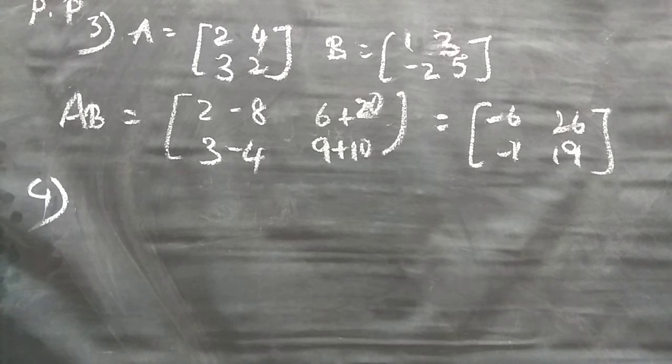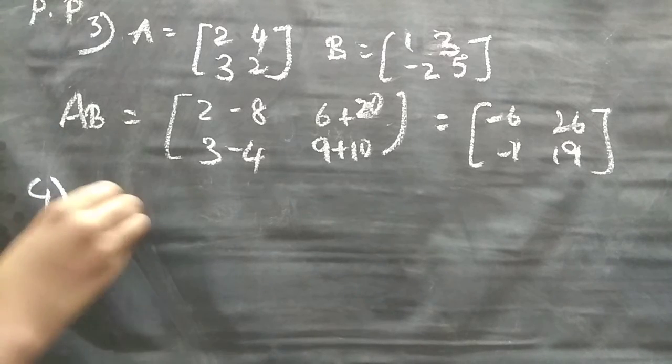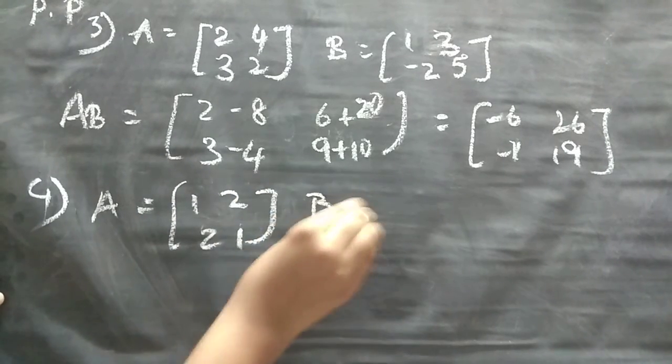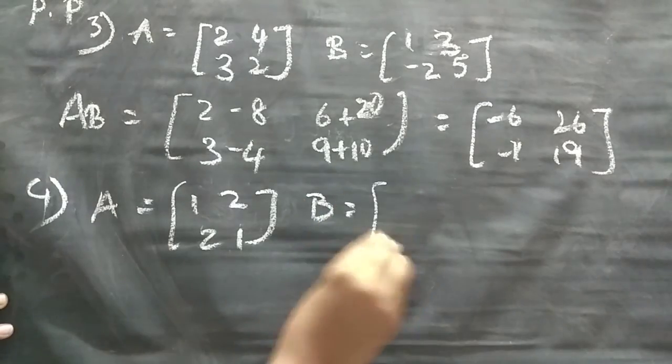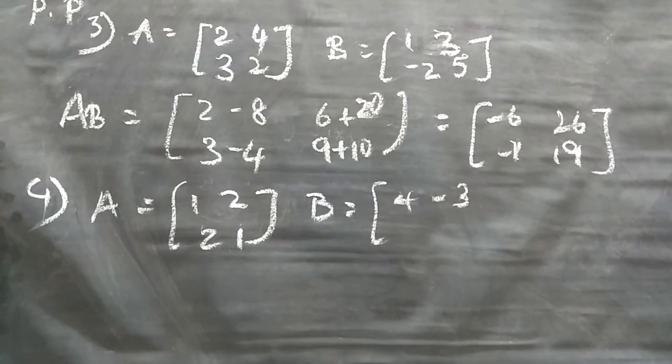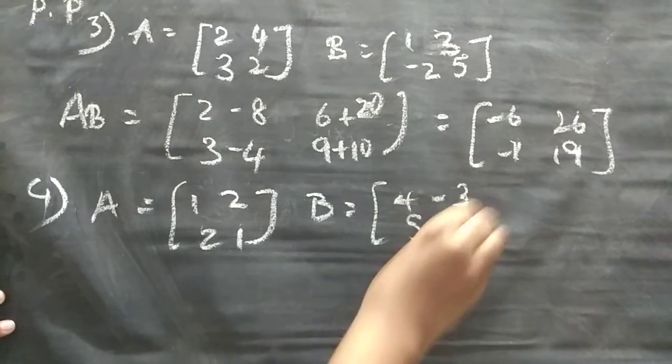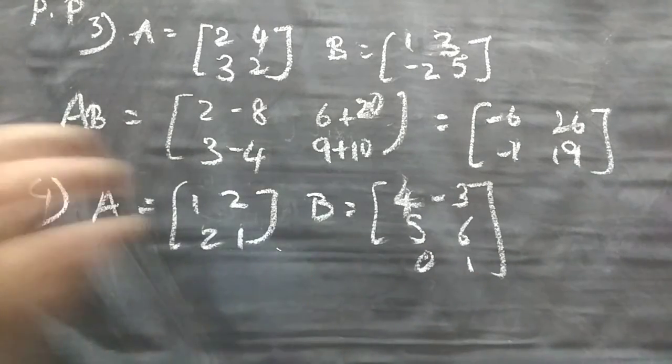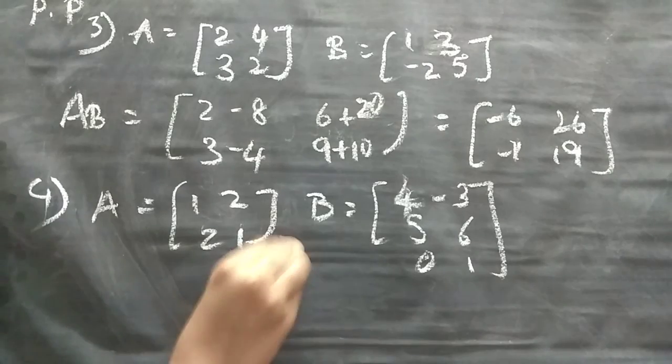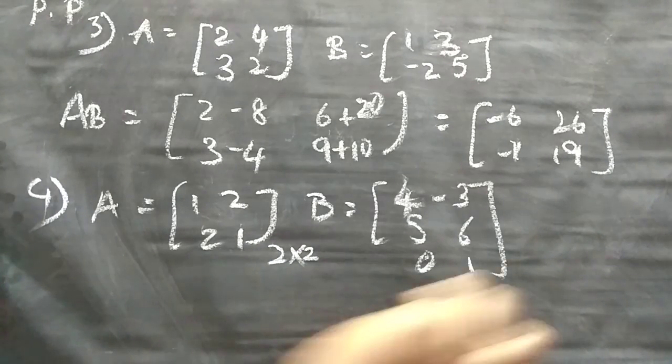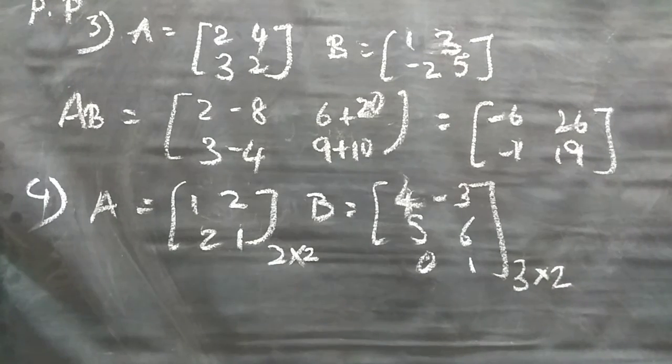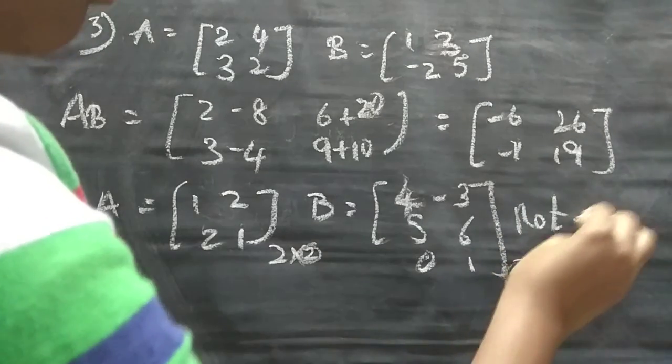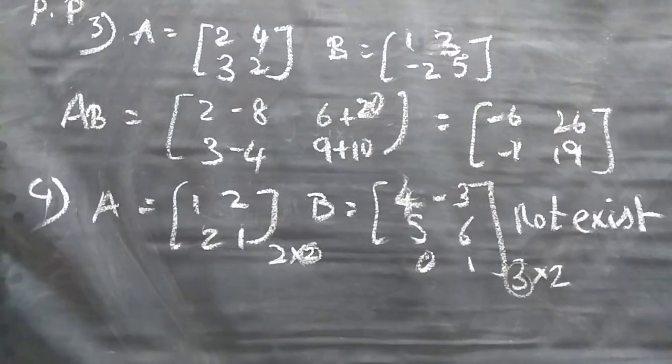Now we will see the fourth question. This is also quite simple only. Like they gave us A matrix. That is [1, 2, 2, 1]. And they gave us B matrix also. That is [4, -3, 5, 6, 0, 1]. So they gave it like, now this one. First you have to write the order of this. So it is 2 cross 2. This one will be 3 cross 2. So by this, what we can say? These two are not equal. So this is not exist. Option number D.